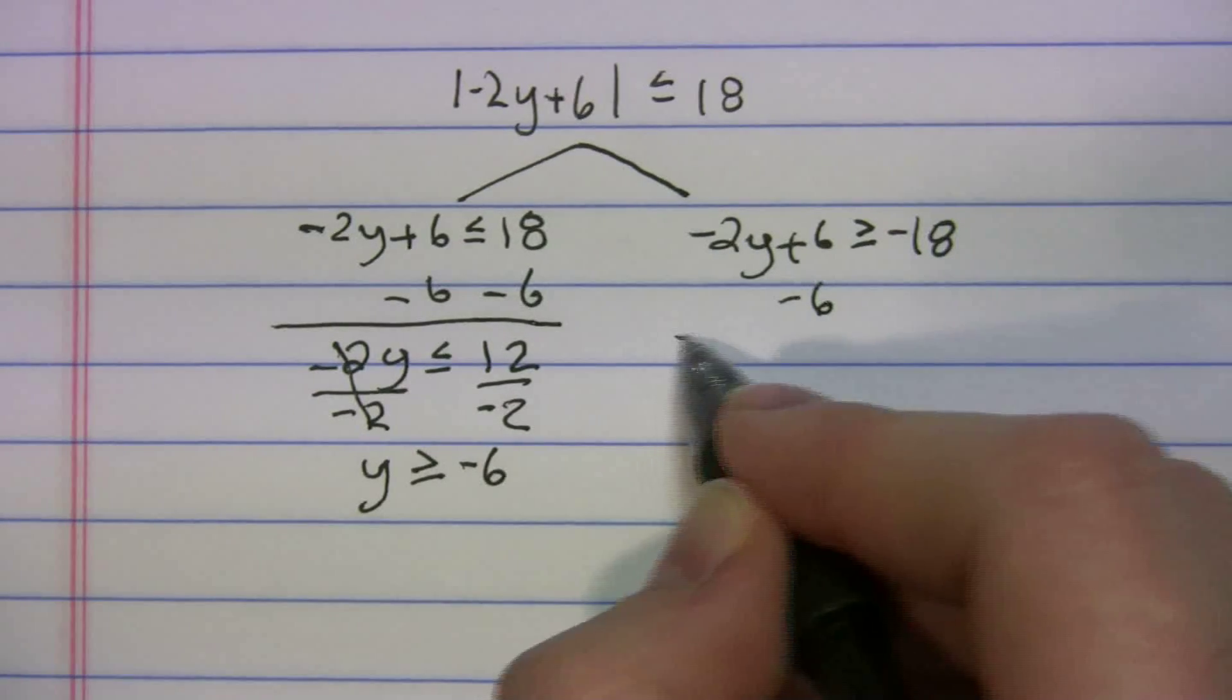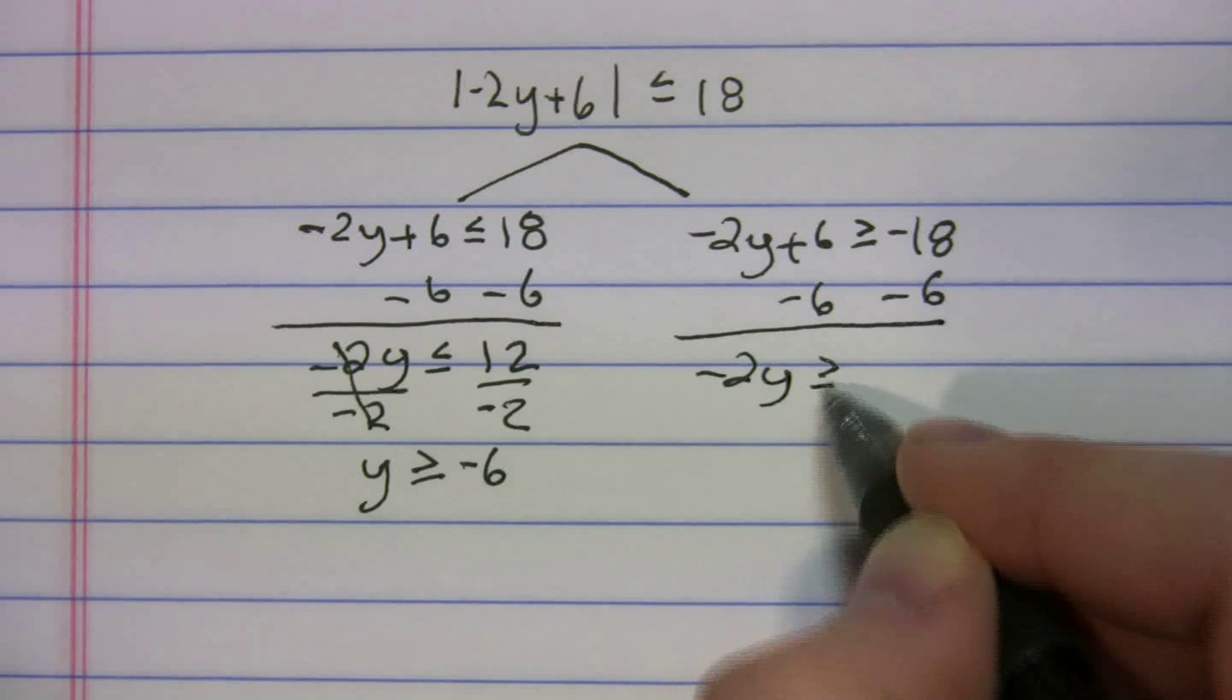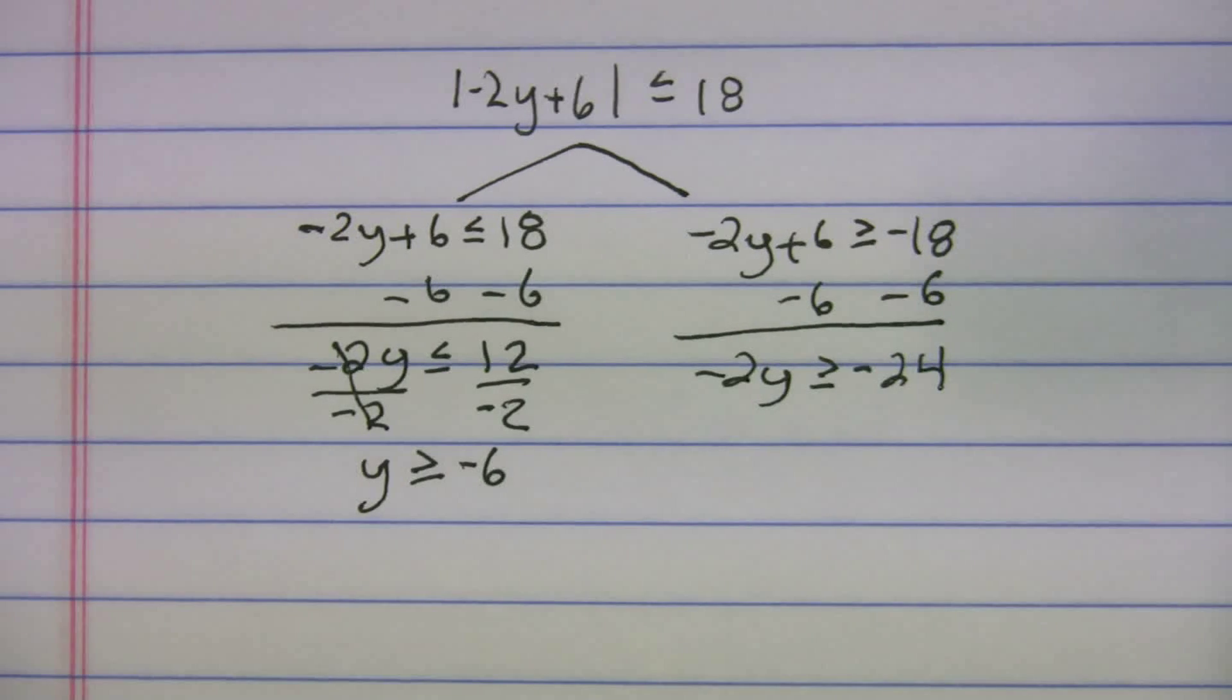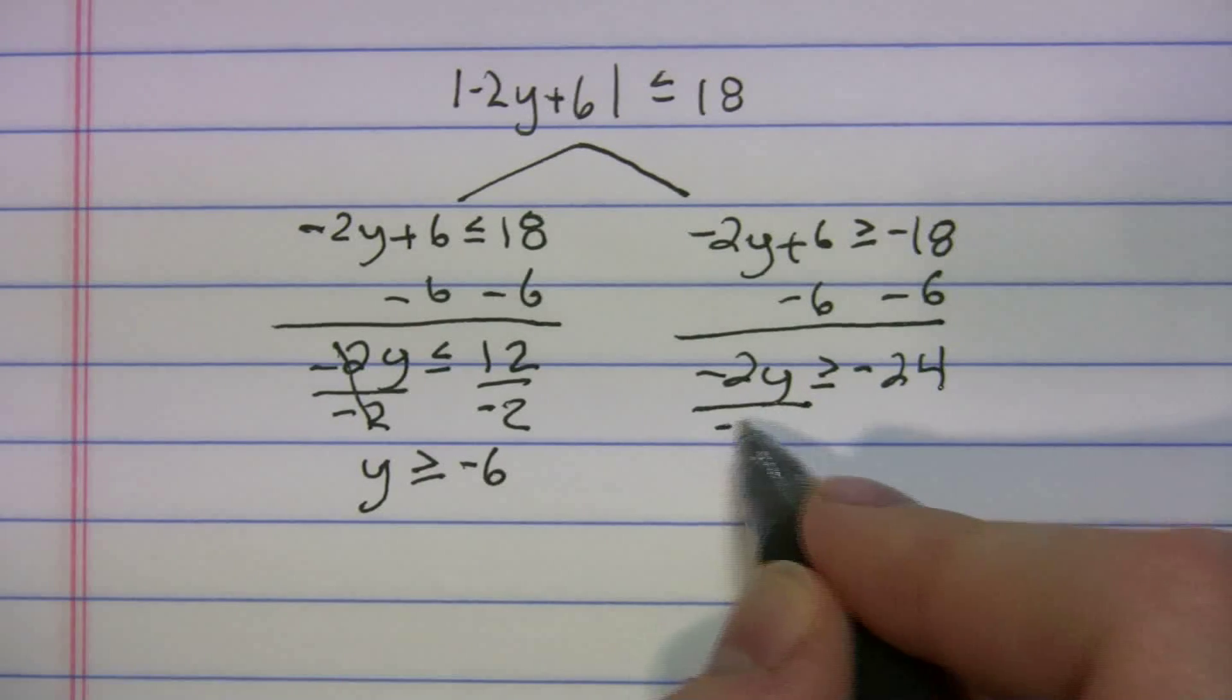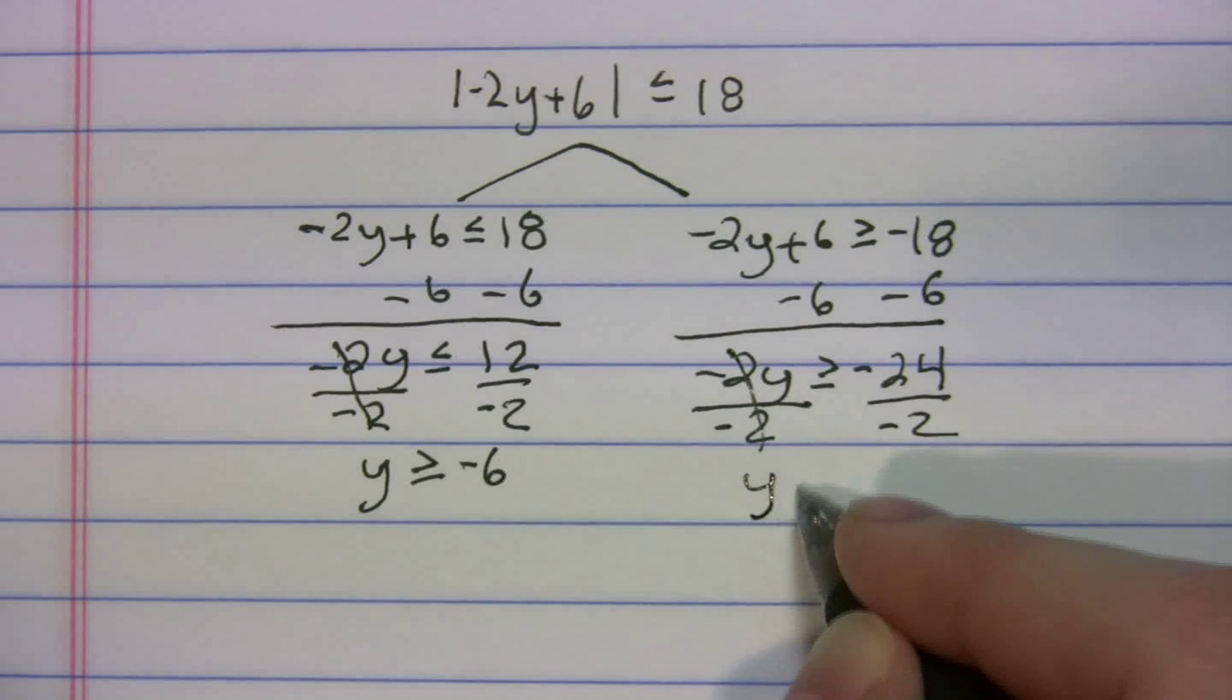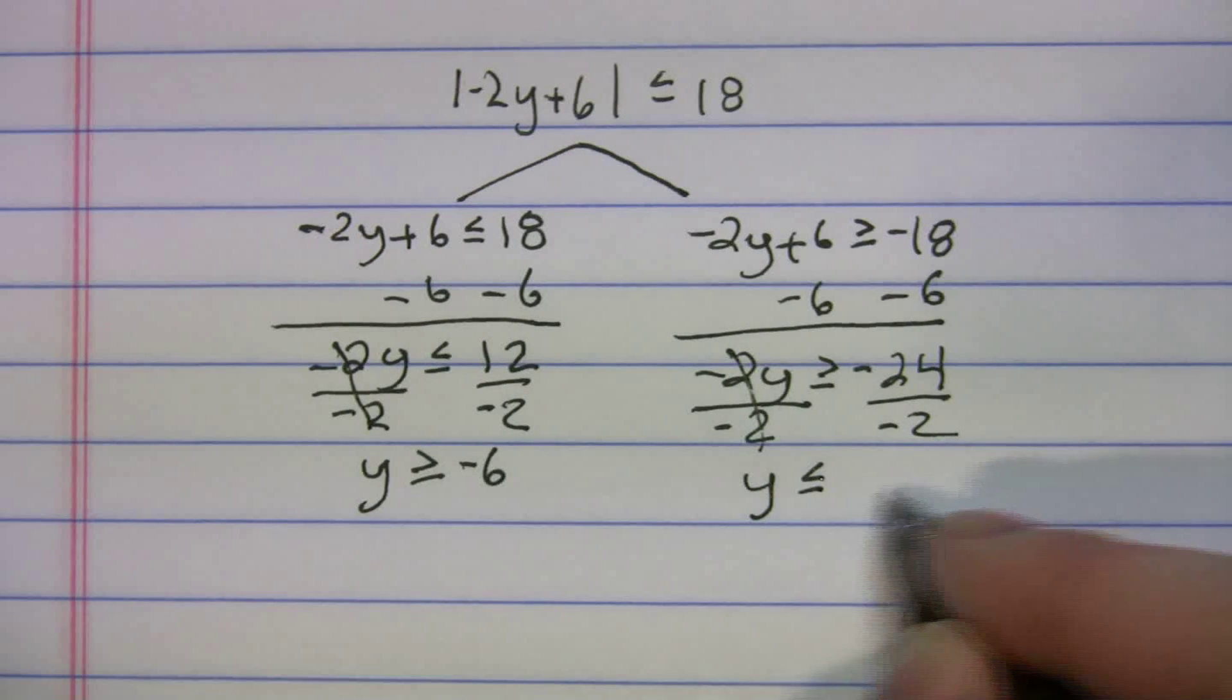Let's solve this one. Minus the 6, minus the 6. -2y is greater than or equal to -24. Okay. Now again we're dividing by -2. We've got to flip the sign. So y is going to be less than or equal to 12.